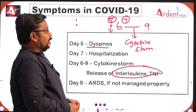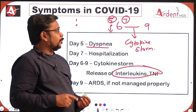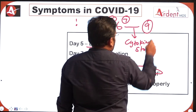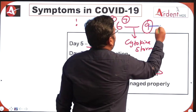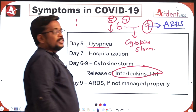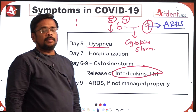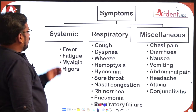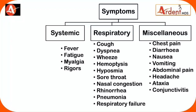If the patient is not treated properly, by day 9 the patient may develop ARDS — Acute Respiratory Distress Syndrome — and may require ventilatory support. The various symptoms of COVID-19 can be classified into: systemic, respiratory, and miscellaneous.